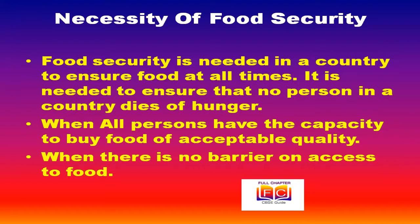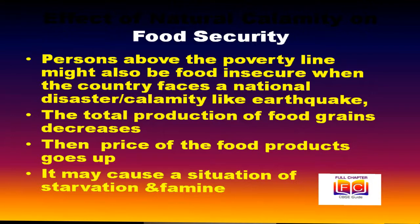Regarding the effect of natural calamity on food security: most of the time the poorest section of society might be food insecure, but persons above the poverty line might also become food insecure when the country faces a national disaster or calamity like earthquake, drought, flood, tsunami, widespread failure of crops causing famine, etc. The total production of food grains decreases due to a natural calamity, creating a shortage of food in the affected areas.